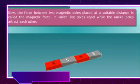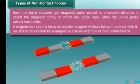The force between two magnetic poles placed at a suitable distance is called magnetic force. Like poles repel while unlike poles attract each other. A magnet can exert force on another magnet without being in contact — so it is also an example of non-contact force. In the first figure both magnets are attracting, while in the second they are repelling each other.